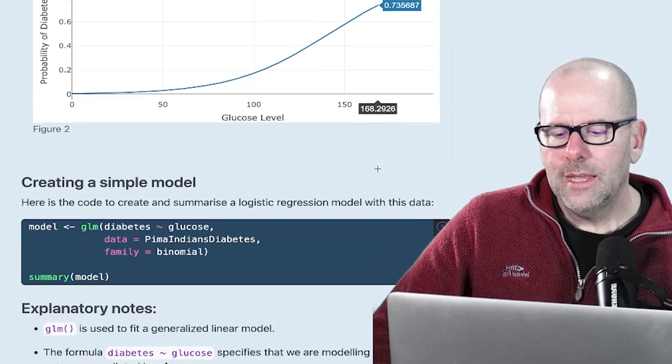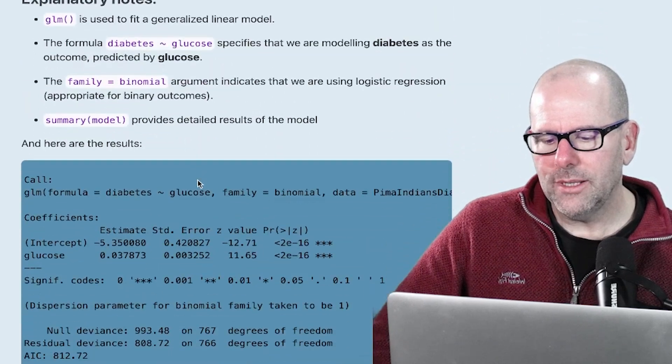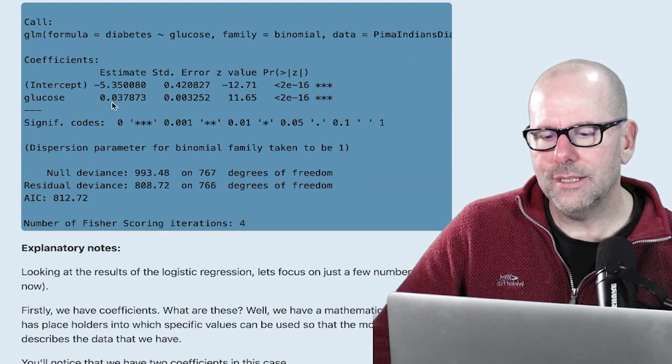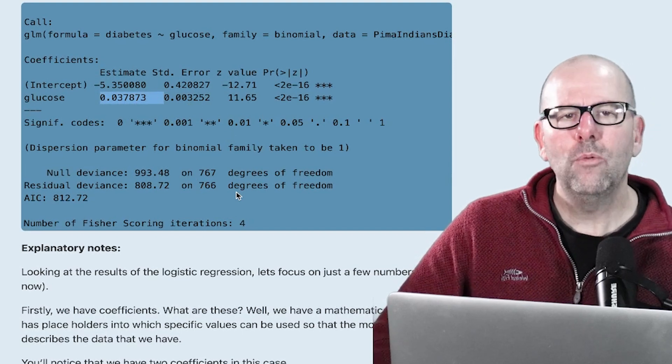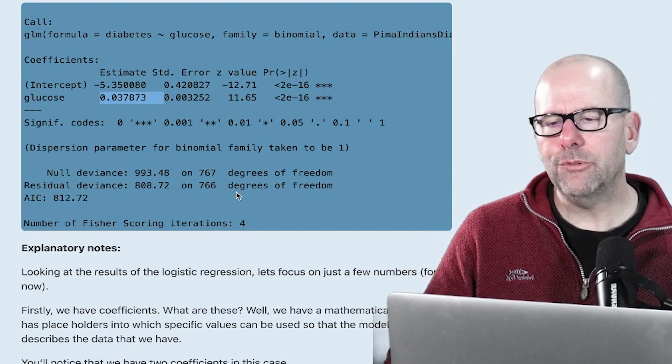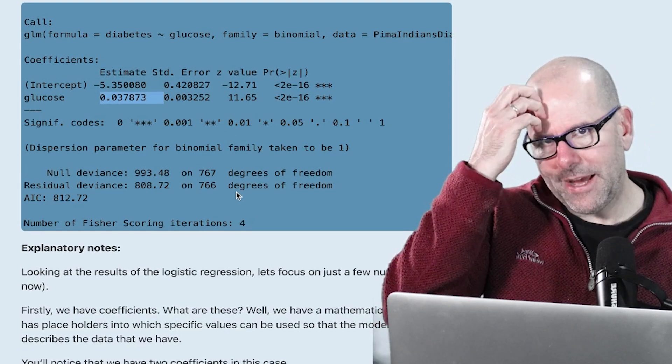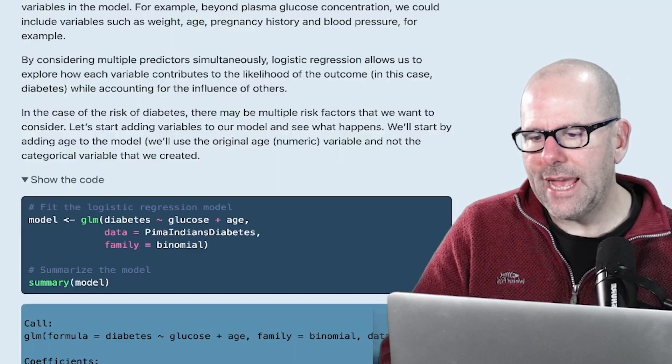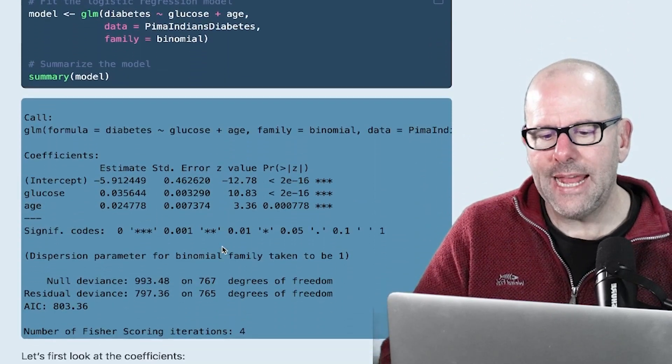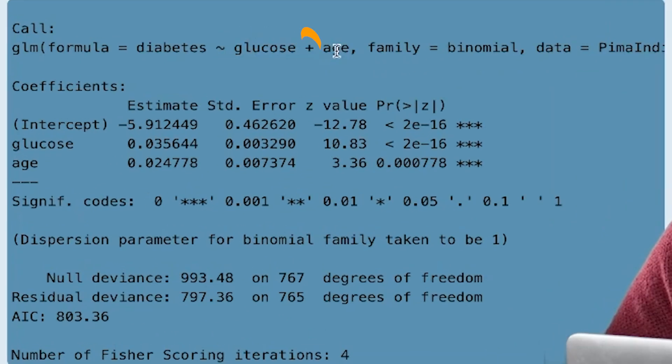Here's the code that we use to create the model. And here is the output. And we can see, boom, shakalaka, glucose has got a positive relationship as we'd expect. Now, we want to start building the model. And we've already spoken in a previous video about adding a single variable to the model. So what did we do? We added down here, we added in, we started with glucose, we added in age.